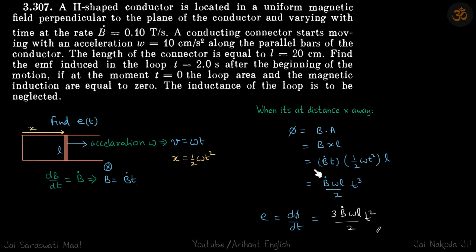B now I can write as B dot times t and X I can write as half ωt squared times L, which is B dot ωL by 2 times t cube.